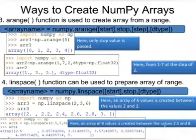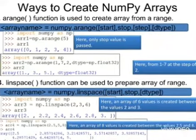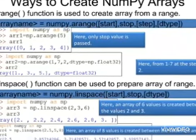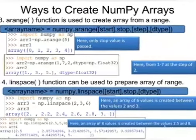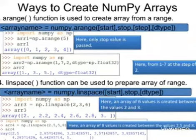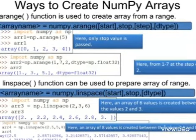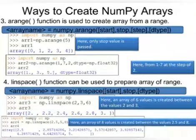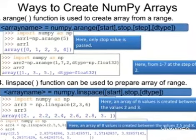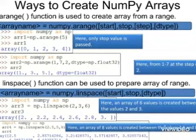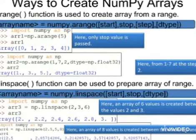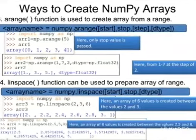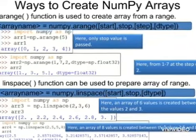Another method is linspace method, in which we have start, stop and number of values. If we start with 2 and stop with 3, then total number of values we will have in this example is 6. Between 2 and 3, we have total six values in it.